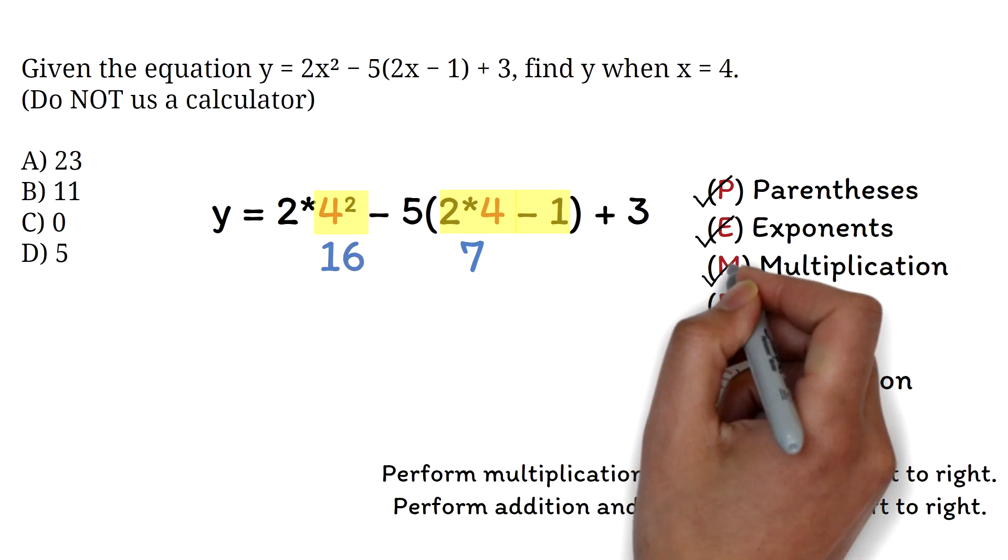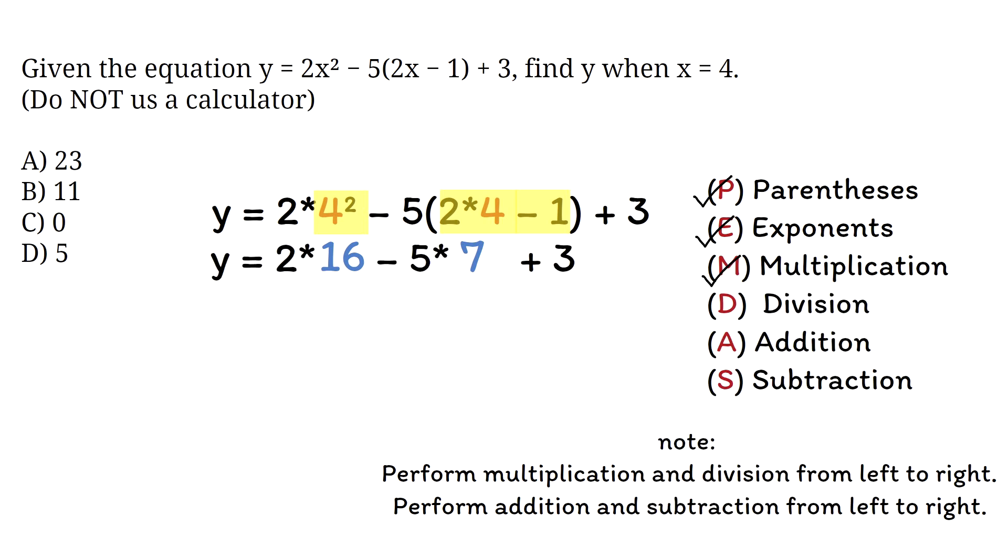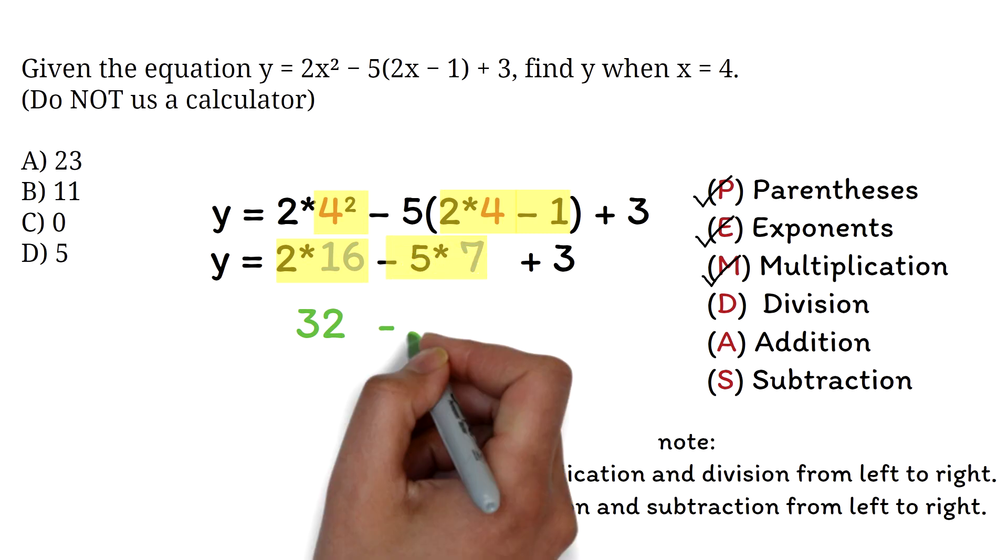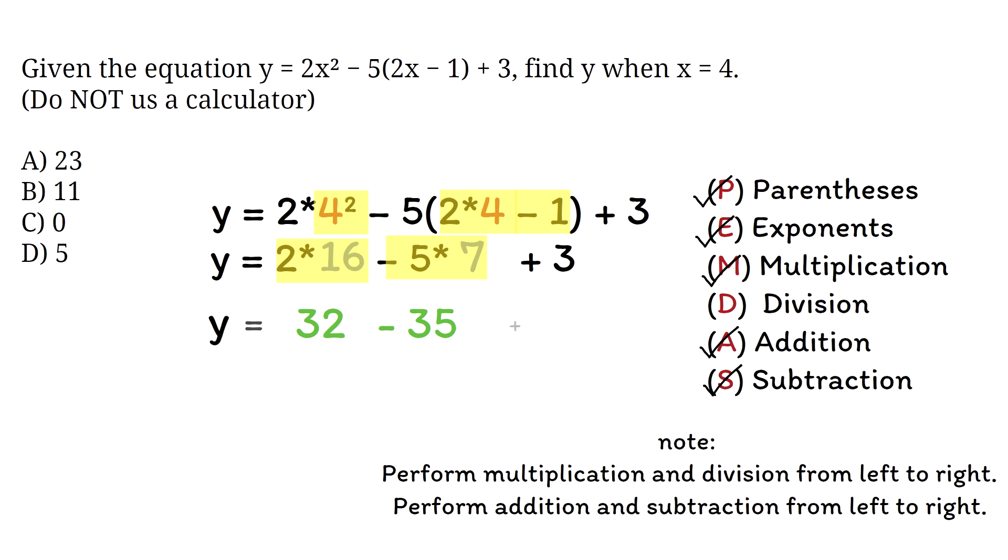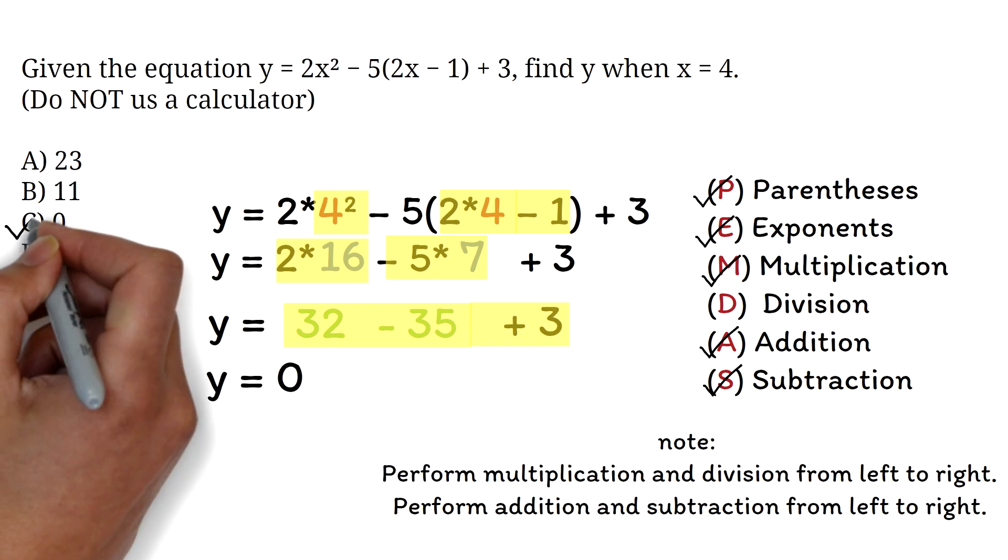Next, we will do all the multiplications. We have 2 times 16, which is 32. Then we have 5 times 7, which is 35. Then finally, you will do the addition and subtraction. 32 minus 35 is negative 3. Plus 3 is 0. So the correct answer is option C, 0.